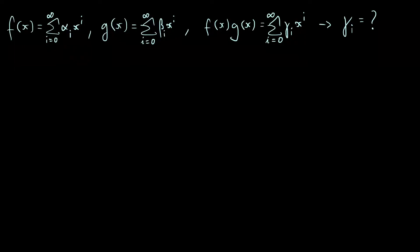Today we're going to have a quick look at some power series. Specifically, we have a function f of x, which is defined as the sum where i goes from 0 up to infinity of some coefficient α_i times x to the power of i. So this is basically α_0 plus α_1·x plus α_2·x² plus α_3·x³ and so on, all the way up to infinity. I'm just using summation notation to write that out.